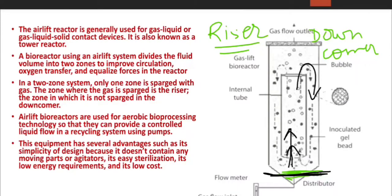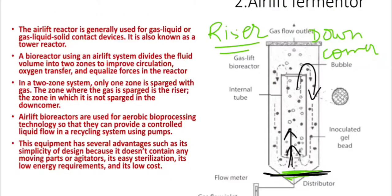The upward and downward movement inside the fermenter results in uniform dispersion throughout the fermenter. In a two-zone system, only one zone is sparged with gas, and the zone where the gas is sparged is called the riser.